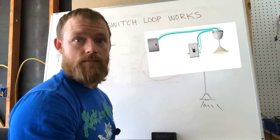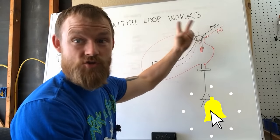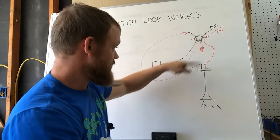But that's it. That's everything. That's how a switch loop works. All it is is switching from a different location and sending two conductors down to a switch.